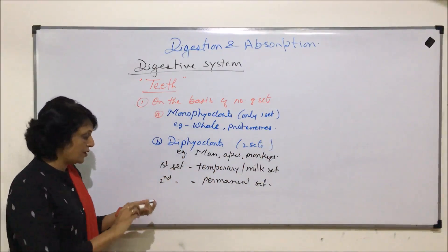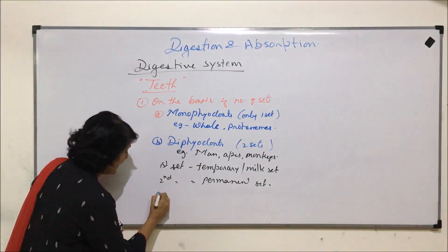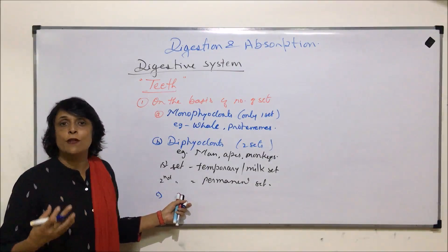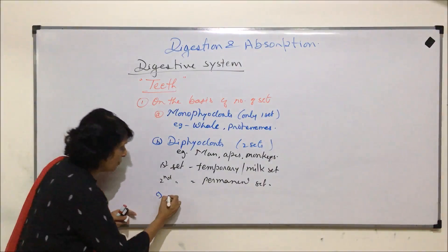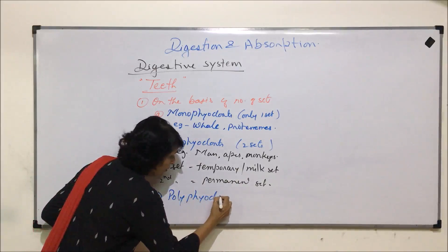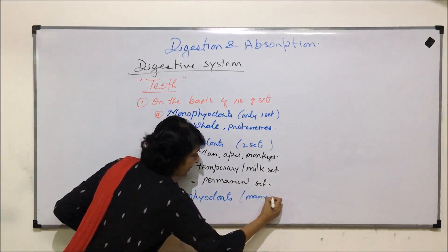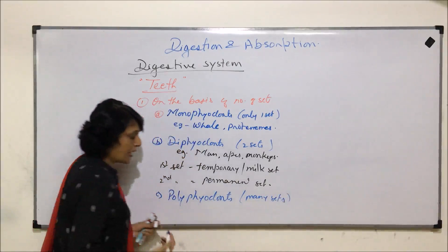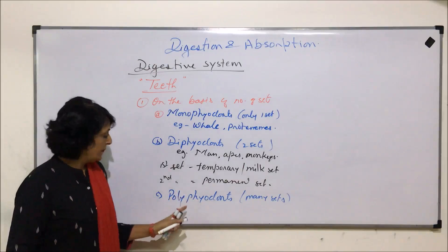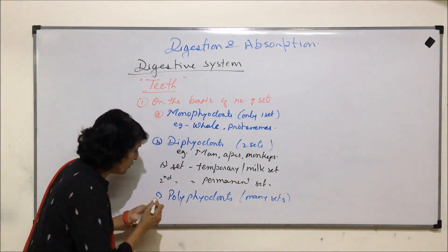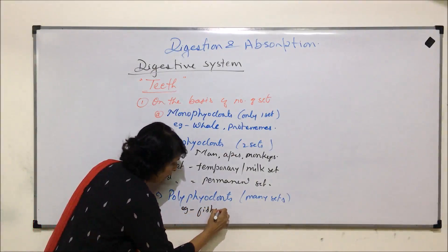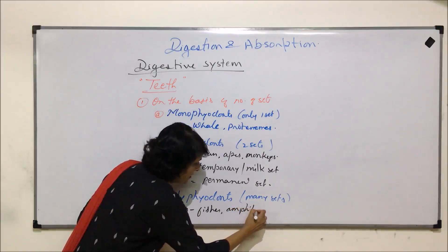The third category: if an organism keeps getting new sets as and when the old ones fall off, they would be called polyphyodonts — many sets. As soon as teeth fall off, a new set erupts. Examples of polyphyodonts are fishes and amphibians.